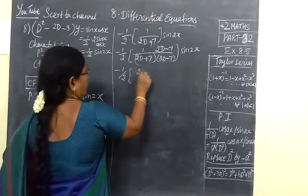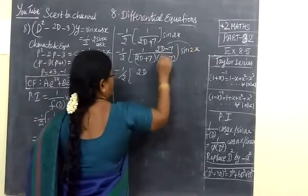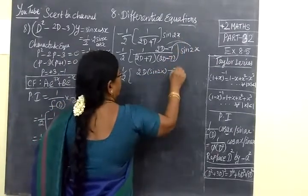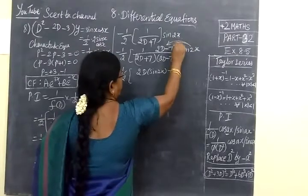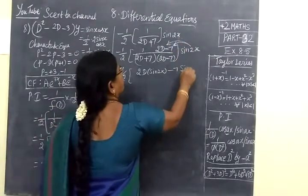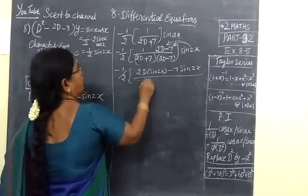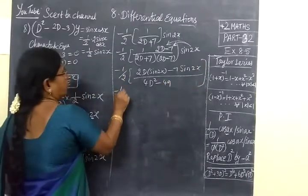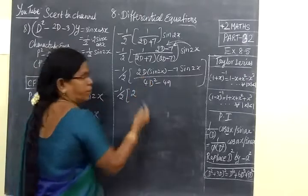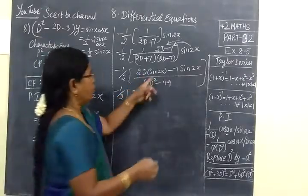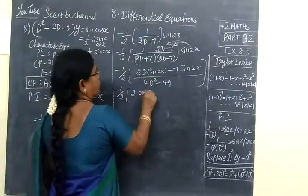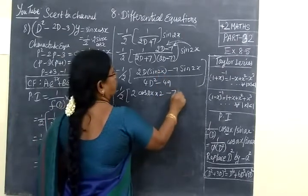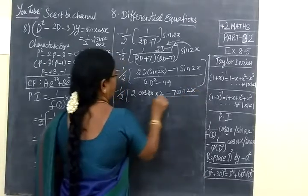Minus half, 2 into D of sin 2X. D of sin 2X, and this is 7 minus 7 sin 2X. When we multiply this minus, so 4D squared minus 49. Minus half, 2 into differentiation. D means differentiation, so differentiation of sin is cos. Cos 2X into 2, into inner function. 2X is only differentiation. Minus 7 sin 2X.